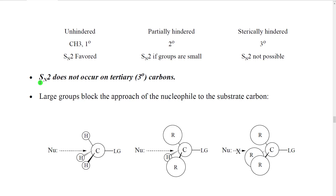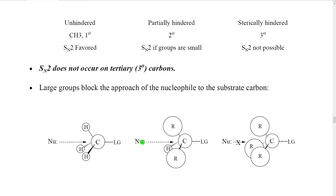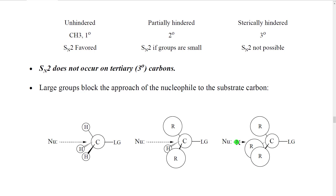I cannot emphasize enough: SN2 does not occur on tertiary carbons. The reason is that the nucleophile has to come in and begin to make a bond to the electron cloud of this carbon from the backside. To do so, it has to fit between the electron and steric clouds of the three other groups on those bonds. As we replace very small hydrogens with larger carbon groups, it becomes harder and harder for the nucleophile to fit in and reach the backside of that carbon. Ultimately, when we have three large carbon groups sterically hindering the backside of that carbon, the nucleophile will just be completely blocked from reaching the carbon.